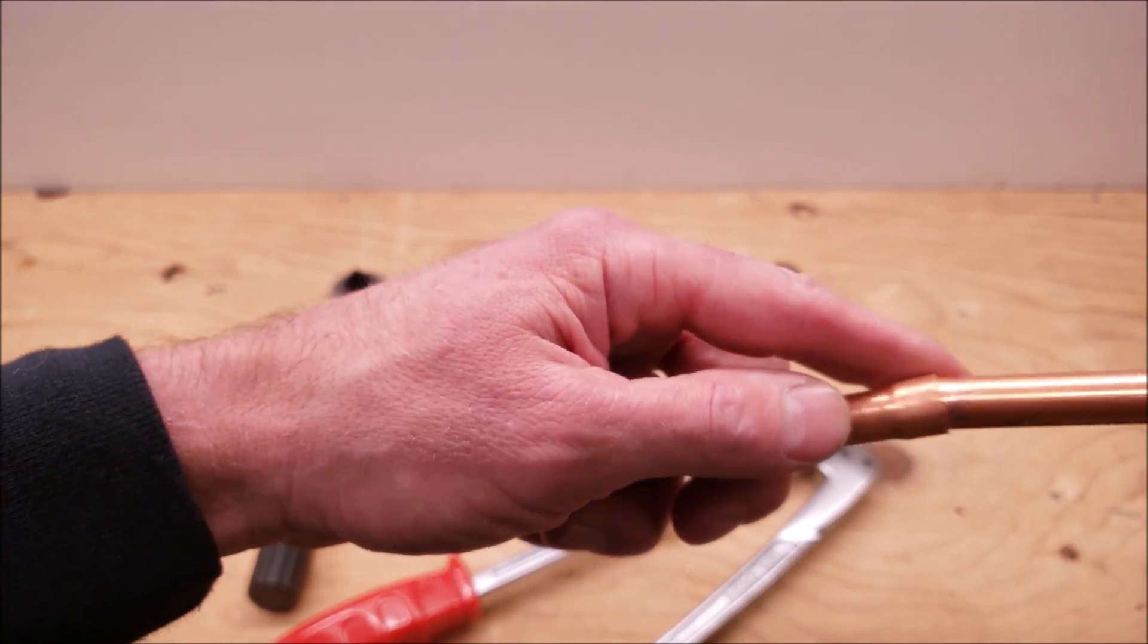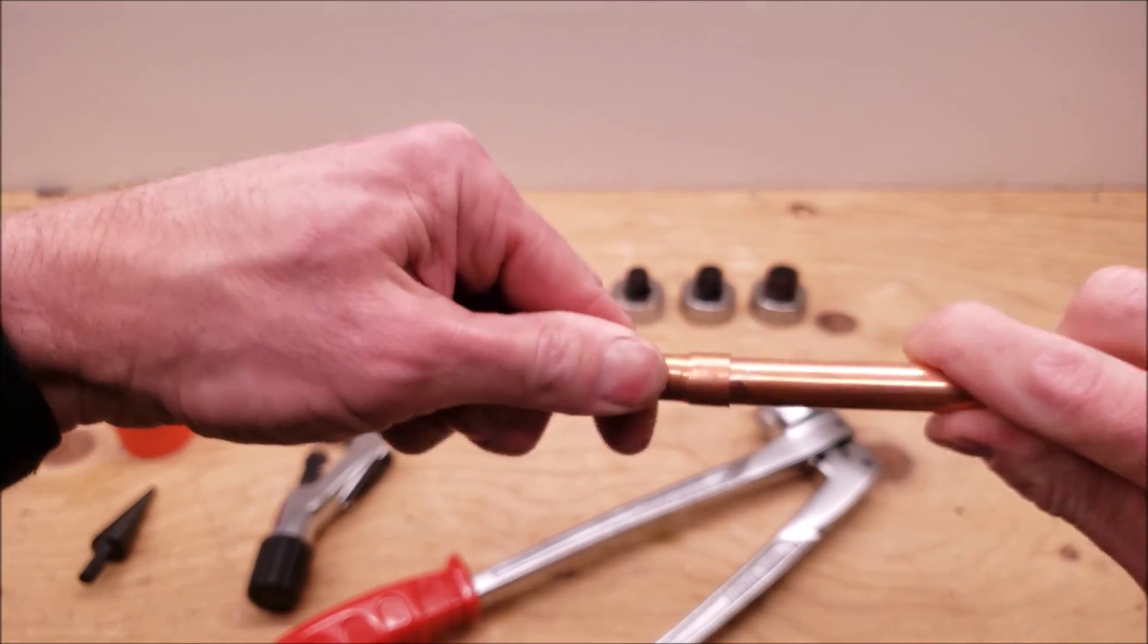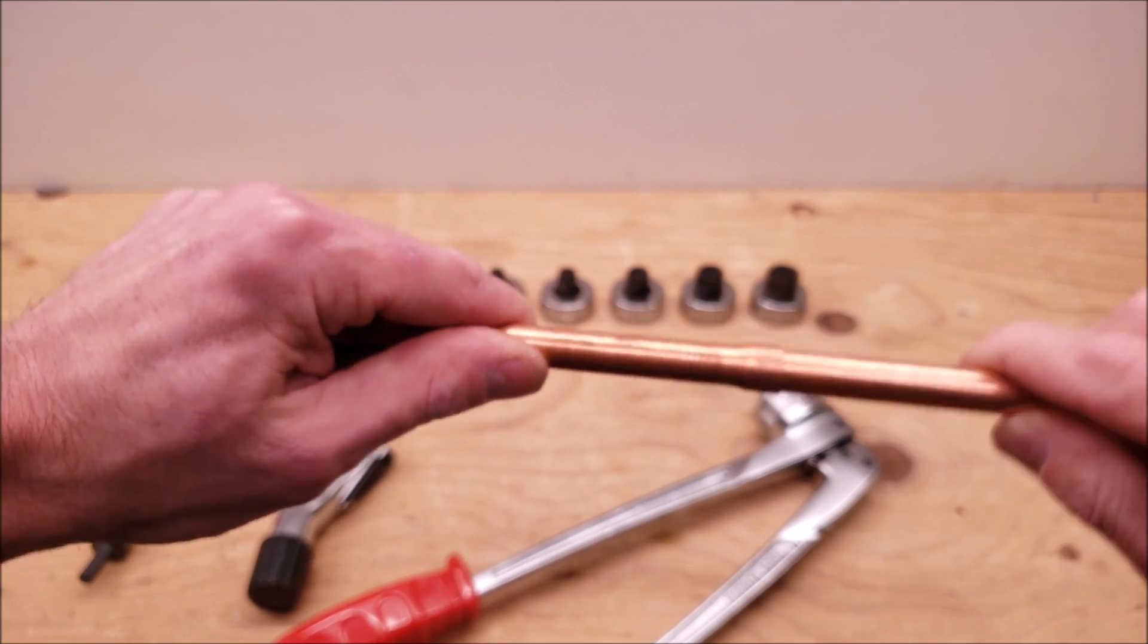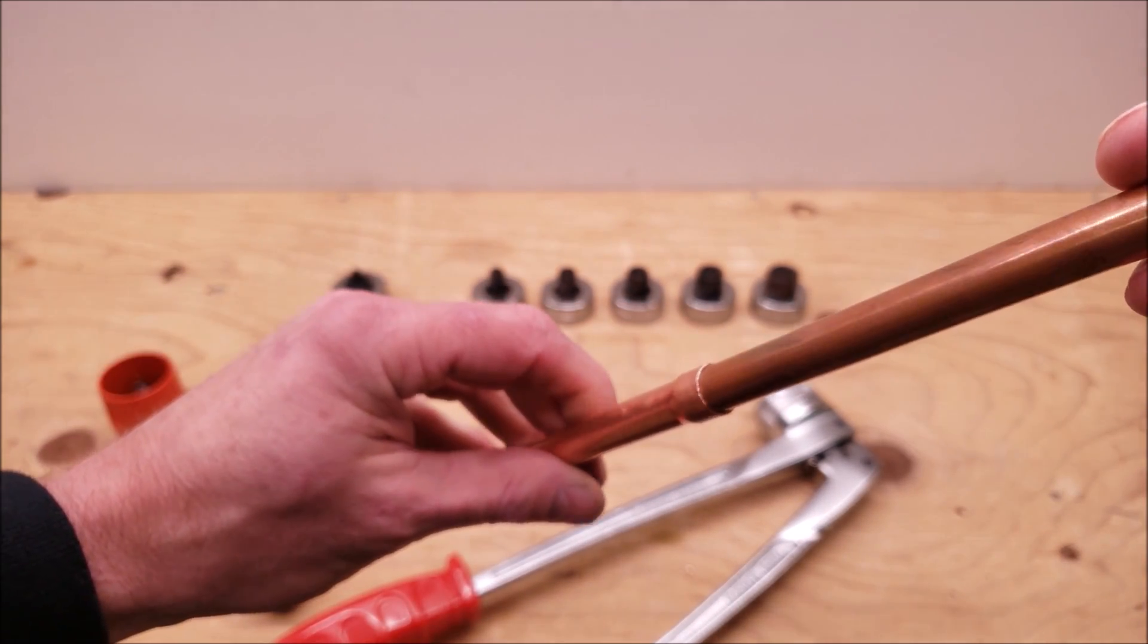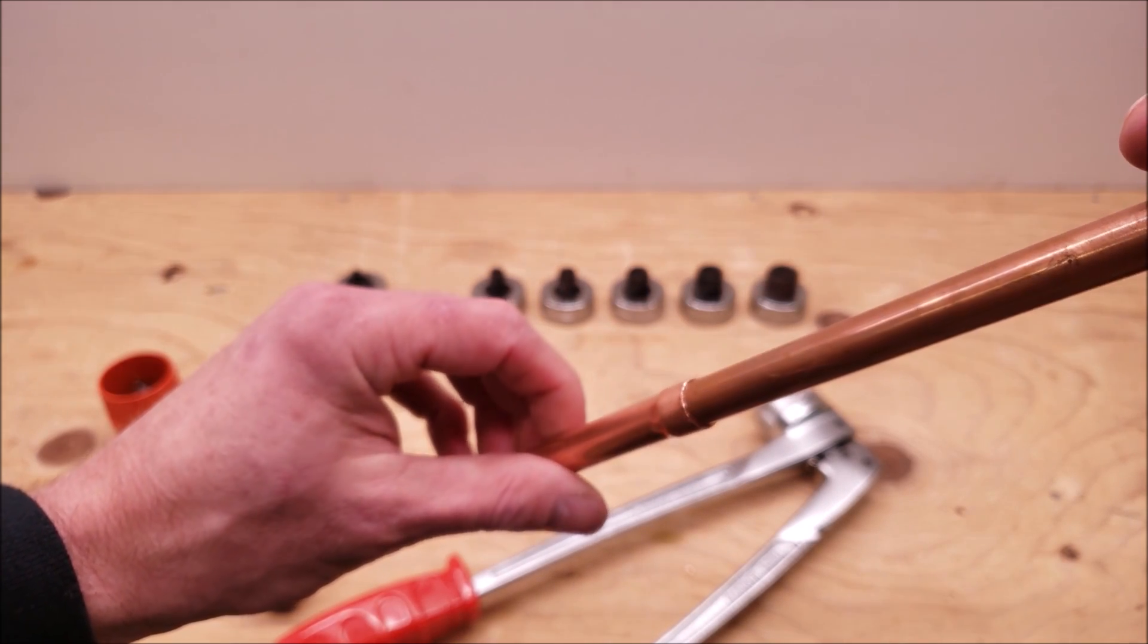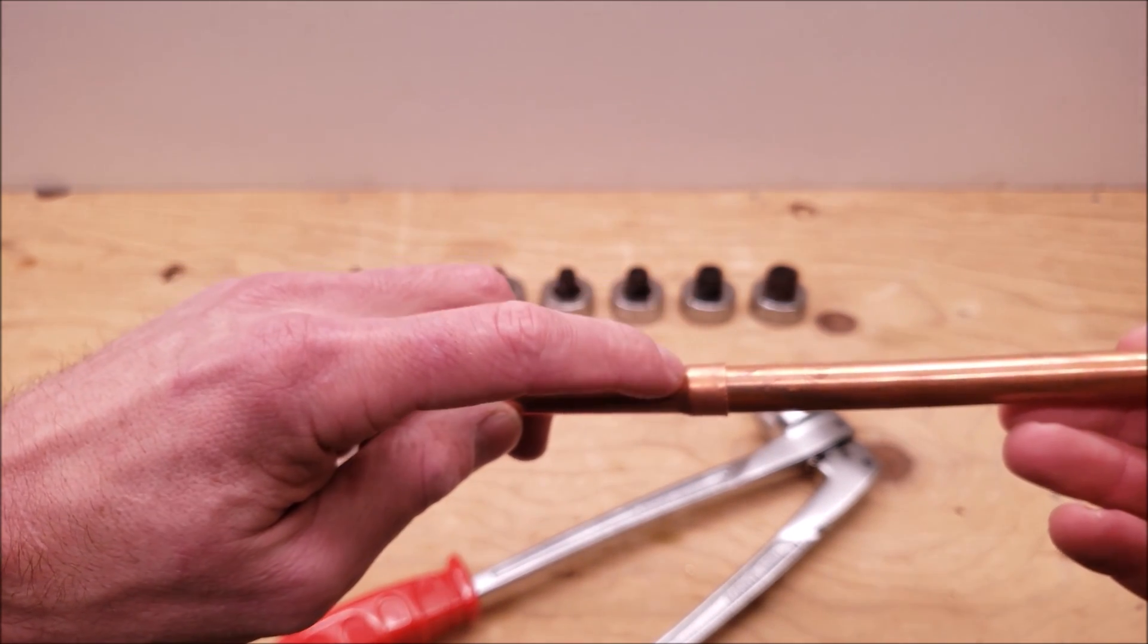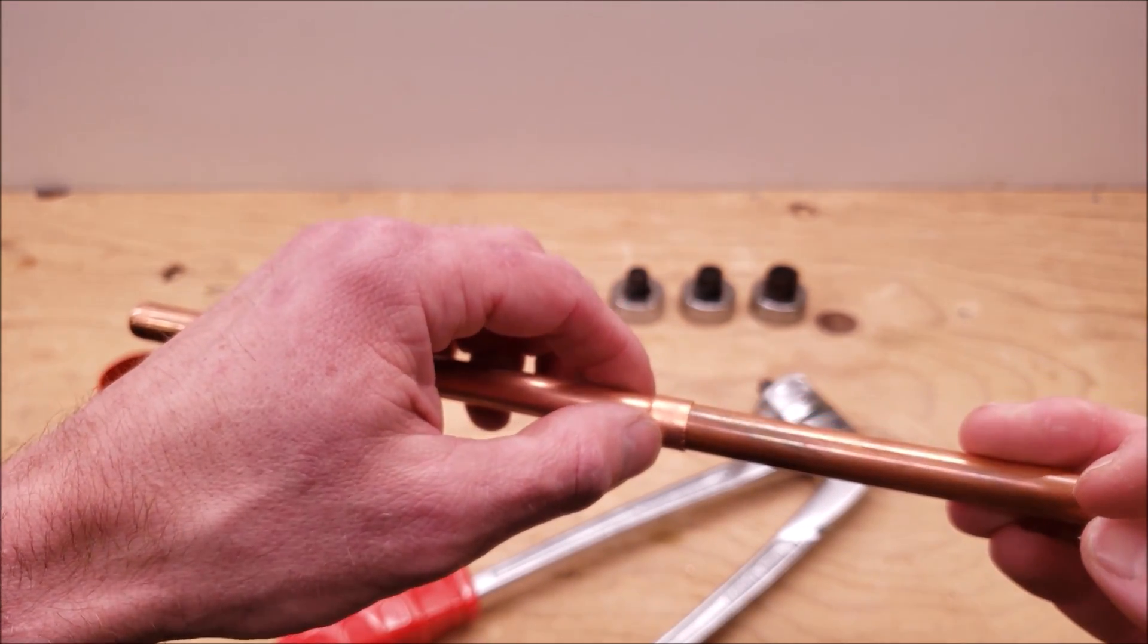And when we go ahead and put our copper tube in it shouldn't be very hard in order to put this in. But at the same time it shouldn't be sloppy. So as you can see there is no slop in this at all. So it's a nice tight swage all the way around. And that's good for when we're silver soldering or brazing in order to have a nice connection right in the inside of here.